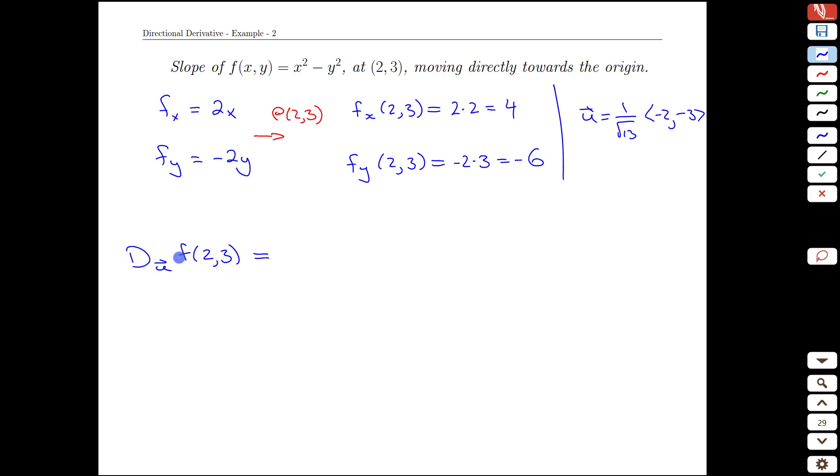The derivative or slope of the surface at the point (2,3) in the direction of u is going to be equal to the 4 value that we found—that's our x derivative at (2,3)—times the x component, which is the 1/√13 times the -2 part.